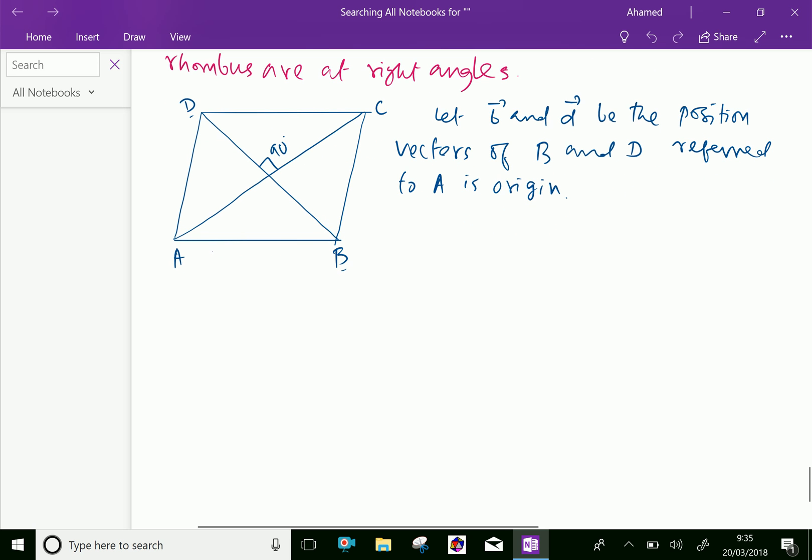Now, vector B plus vector D equals vector AC. Also, vector DB is position vector of point B minus position vector of point D. Therefore, vector DB can be written as B minus D.